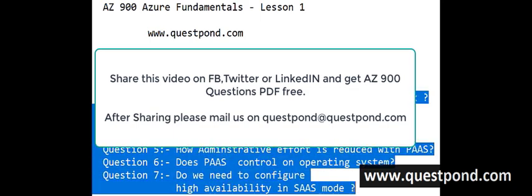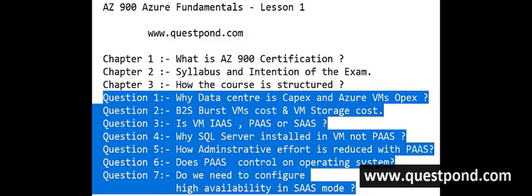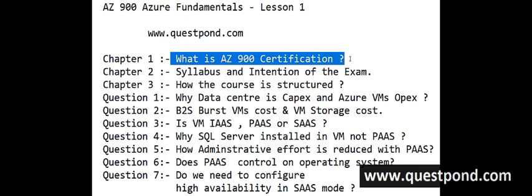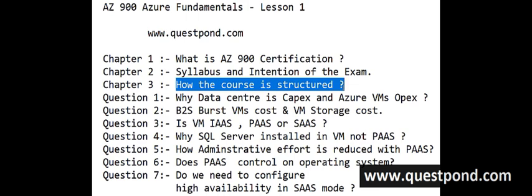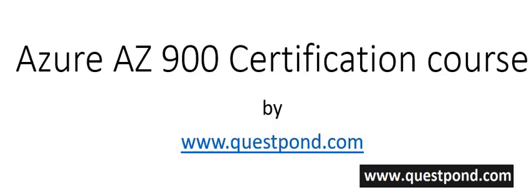In this one hour we will cover 7 questions. Before starting, let's understand what exactly the AZ-900 Certification is, what kind of syllabus it has, how many topics, what the intention and goal of the exam is, and how this course is structured. AZ-900 is a Microsoft Certification Exam which tests your fundamental knowledge of Cloud and Azure services. Anyone making their first move into Cloud, specifically Azure Cloud, this certification is for you.